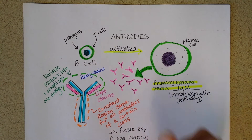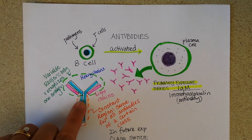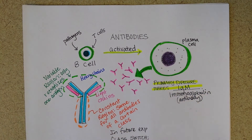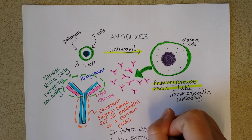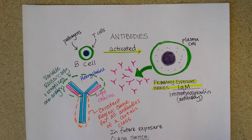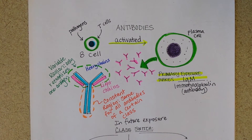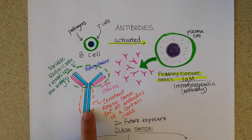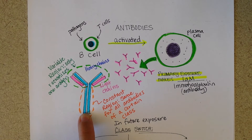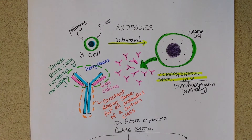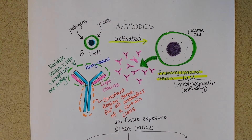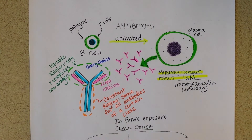But then gradually over the course of that exposure, and definitely in future exposures, a class switch will occur, and that means that this part of the antibody will now be different too. So the constant region either is IgM, IgG, IgA, or IgE. There's also IgD but we don't talk too much about that one.